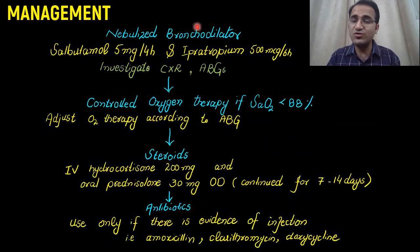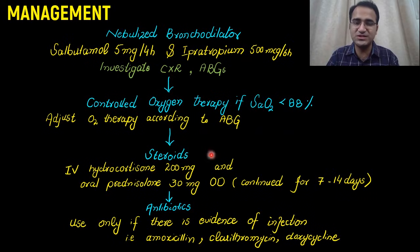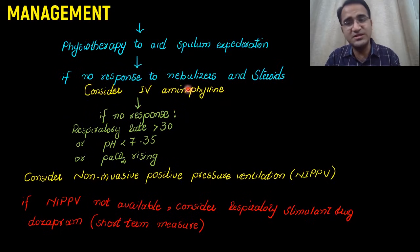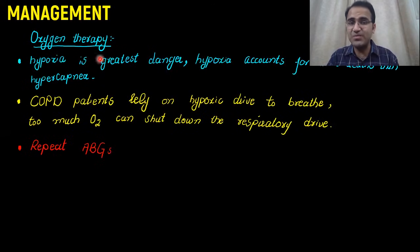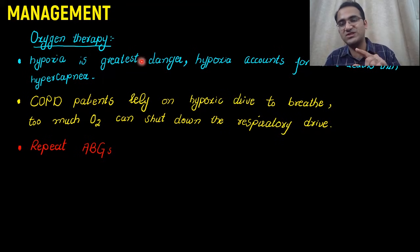In summary: we talked about treatment of COPD exacerbation with nebulized bronchodilators, controlled oxygen therapy if oxygen saturation is less than 88% — giving oxygen to maintain between 88 to 92% saturation — steroids, antibiotics if there is evidence of infection, physiotherapy, and if there is no response, IV aminophylline and non-invasive positive pressure ventilation. COPD patients rely on the hypoxic drive to breathe, so do not give too much oxygen that shuts down the respiratory drive, and do not give too little that they develop hypoxia and death.